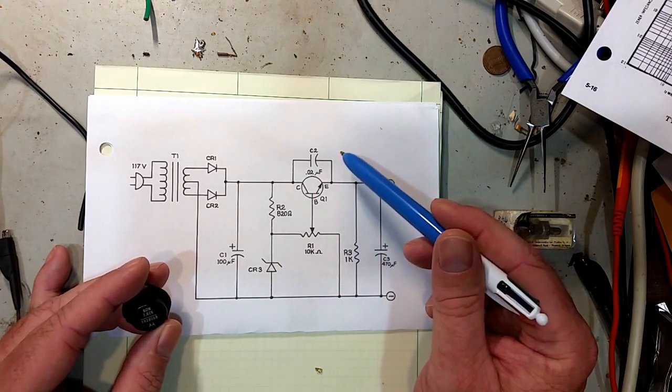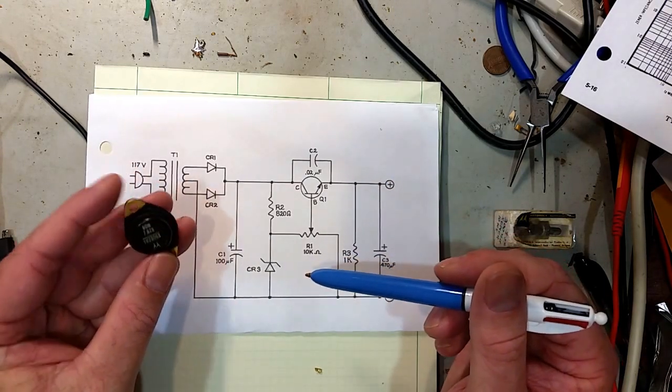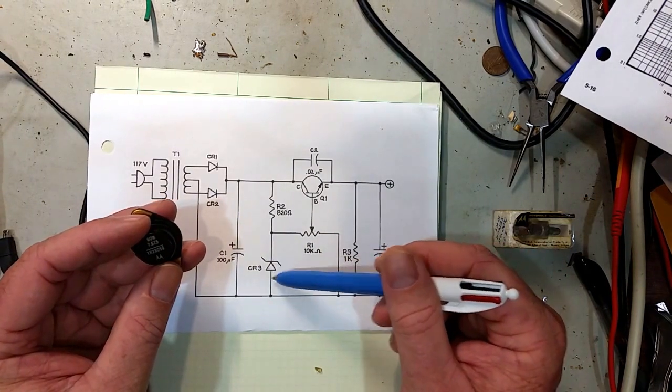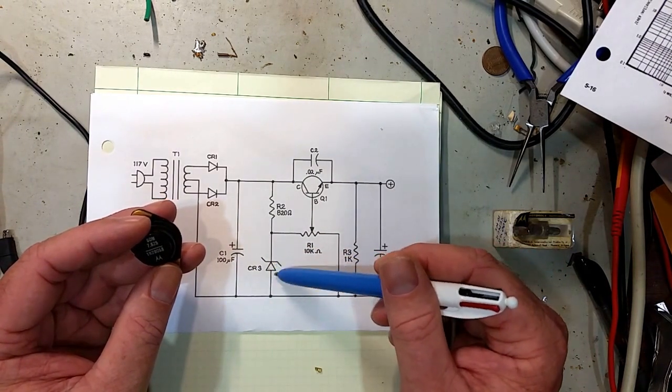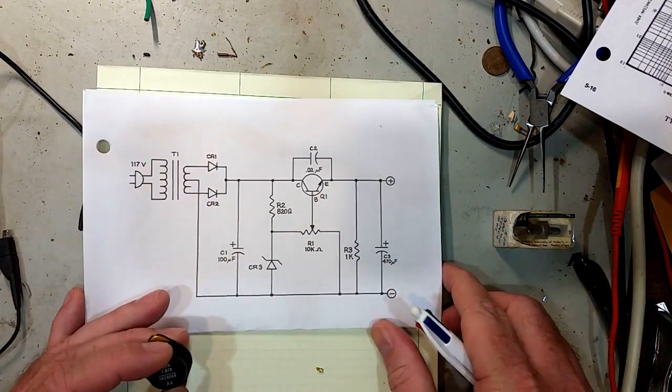We might use something like a Darlington pair up here to give us more current gain to handle something, especially something up in the 50-watt range. But there's very little current, the half-watt Zener in this circuit is definitely sufficient.